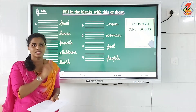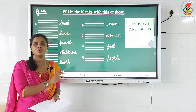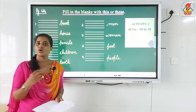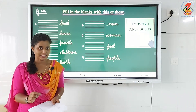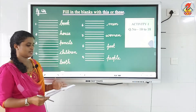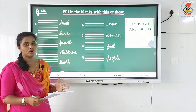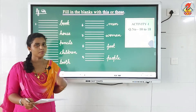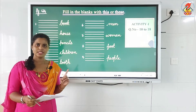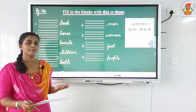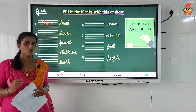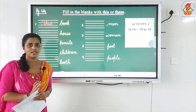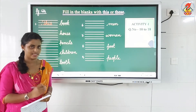You have to figure out whether the noun given is singular or plural. If it is singular, you have to use 'this'; if it is a plural noun, you have to use 'these'. So, the first question: blank book. Is 'book' a singular number or plural number? Singular number, isn't it. Book is singular, so what will be the answer? Very good — 'this'. So you have to write here: THIS. This is a book.